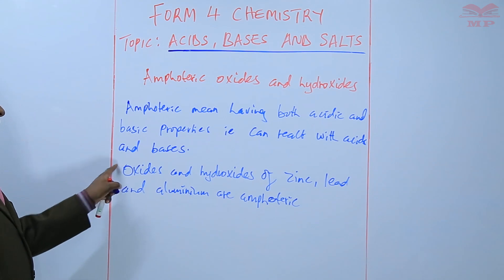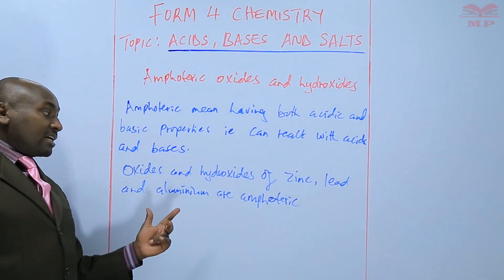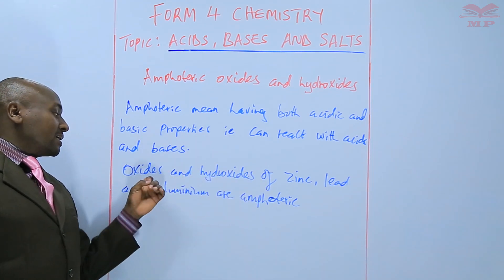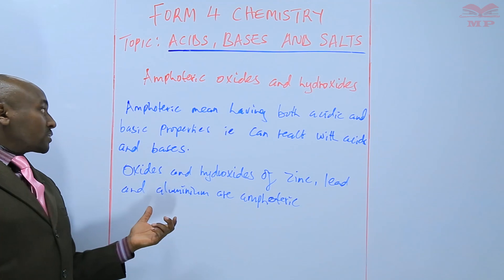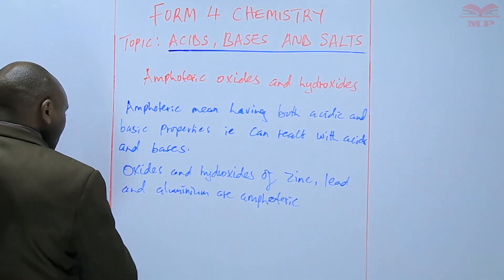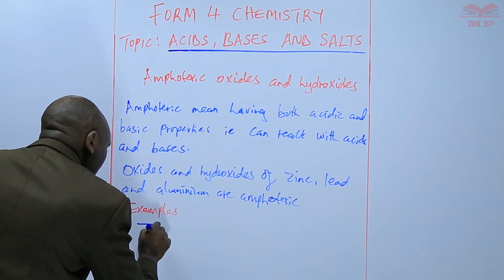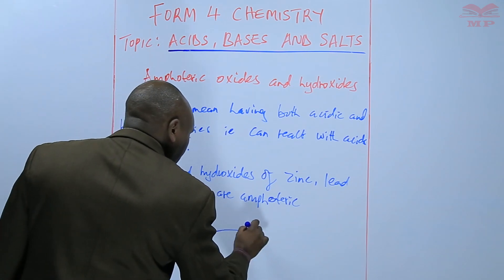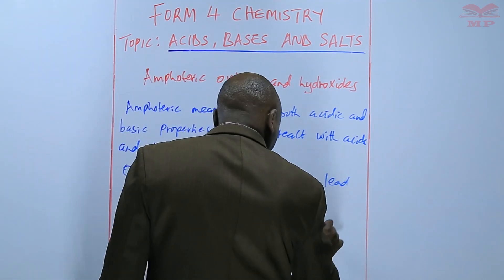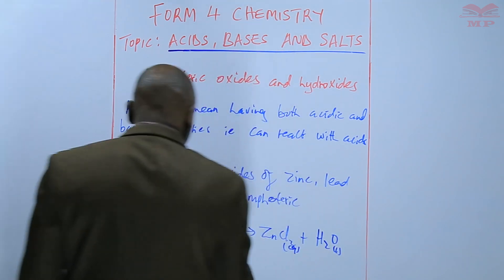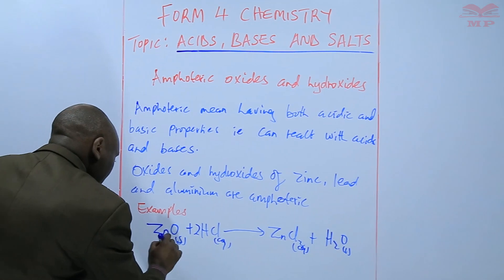Both the oxides and the hydroxides of zinc, lead, and aluminium are amphoteric. For example, zinc oxide can react with hydrochloric acid to form zinc chloride plus water. In that case, zinc oxide is acting as a base.